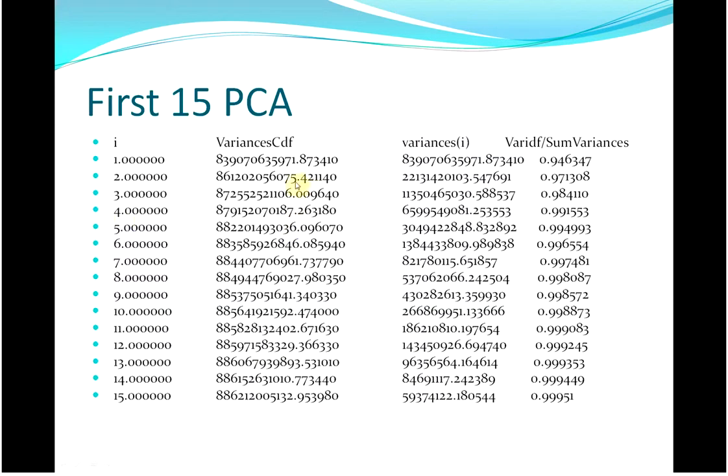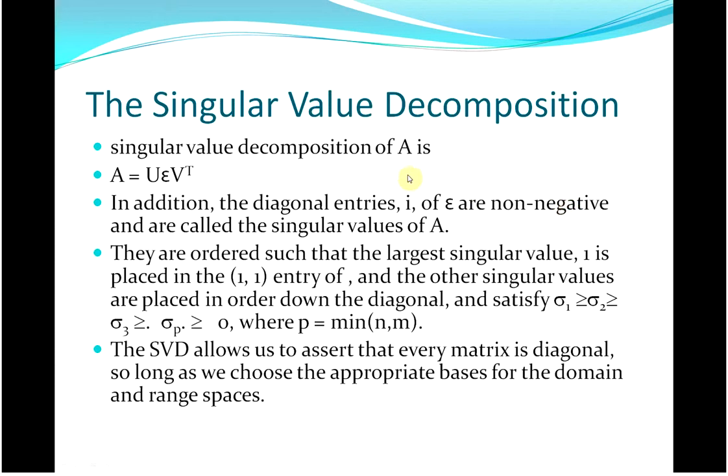What I did then was, I got the variance of the first one over the total variance. The first eigenvalue divided by the sum of the eigenvalues, the first eigenvalue divided by the total variance, it gives you 94%, add the first 2, 97%, add the first 3, 98%, the first 4, 99.15%, the first 5, 99.49%, and when I get down to the first 15, it was 99.951. The diagonals are non-negative. They're in decreasing order.